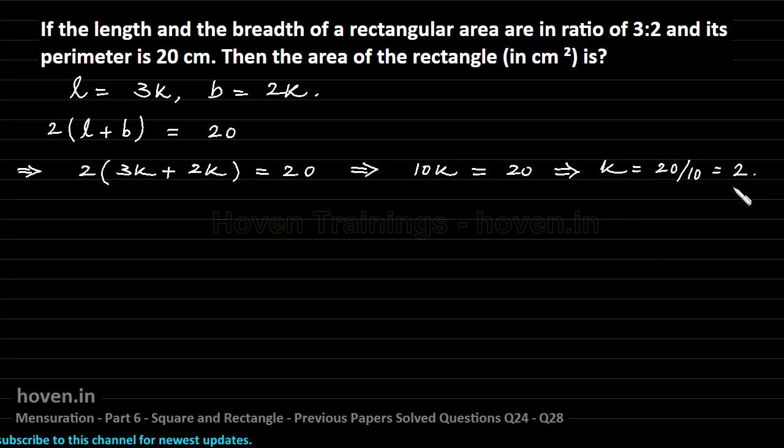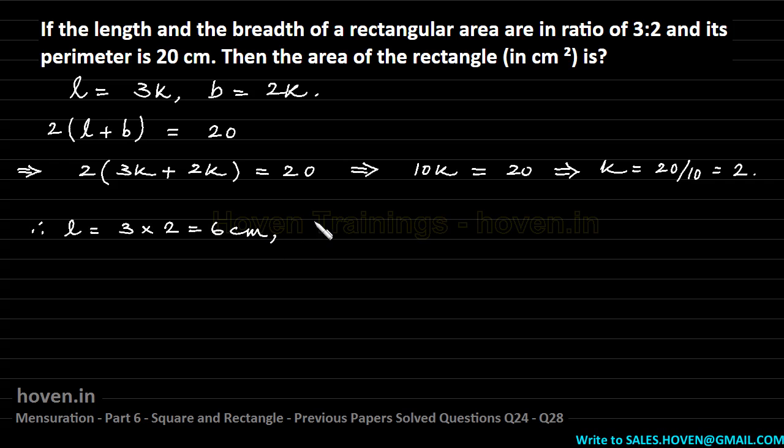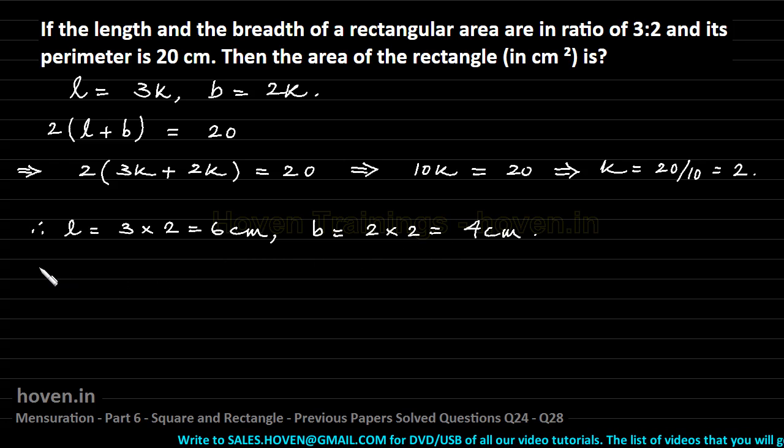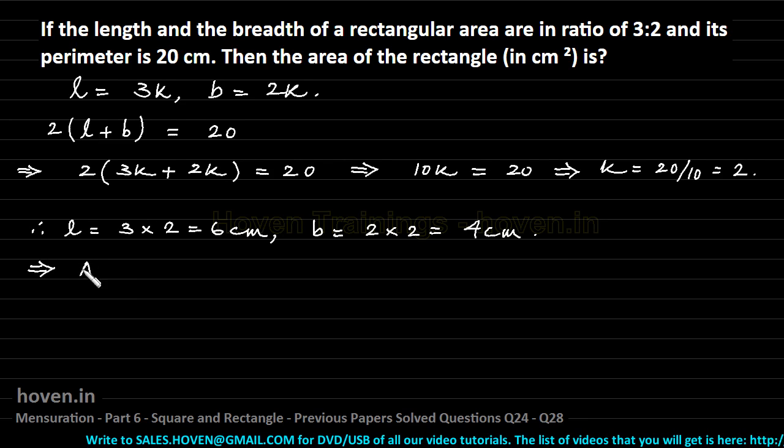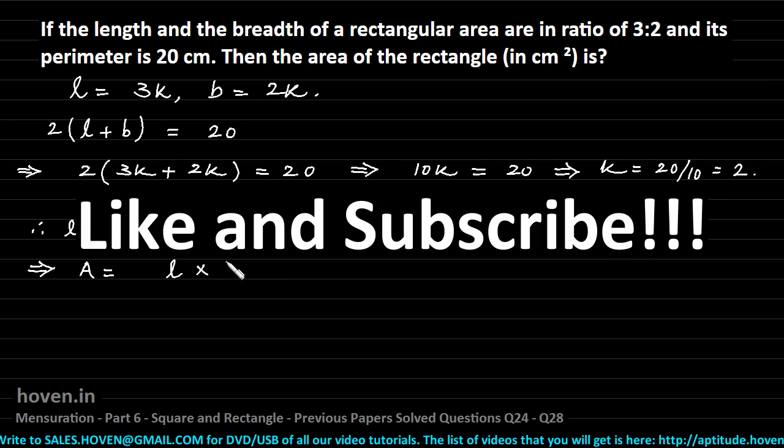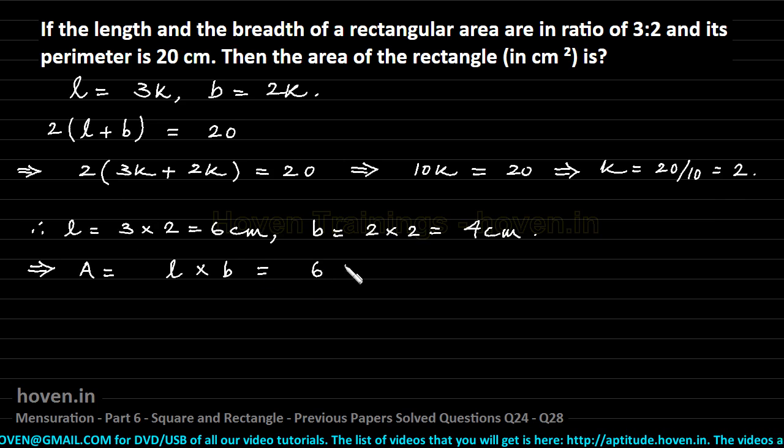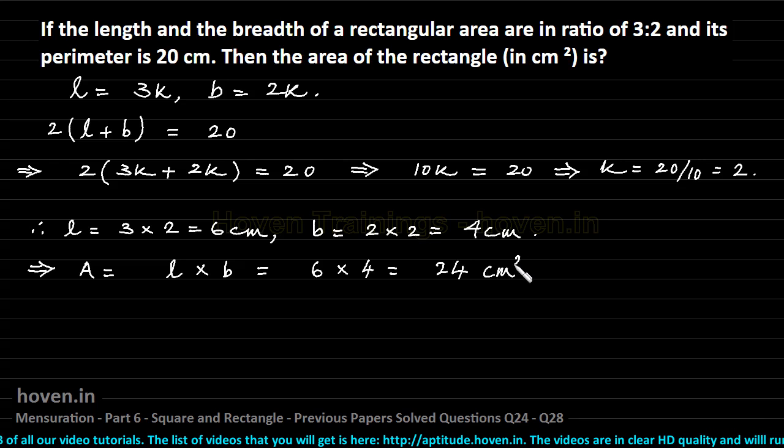Since k is determined as 2, we can now write the values of length and breadth. Therefore length is equal to 3 into 2 equal to 6 centimeter and breadth equal to 2 into 2 equal to 4 centimeter. Now we have the absolute values of length and breadth in centimeters, which implies area is equal to length multiplied by breadth which is equal to 6 multiplied by 4 equal to 24 square centimeter.